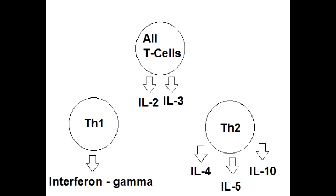What is the function of interleukin-3? The function of interleukin-3 is to support the growth and differentiation of bone marrow stem cells. They have functions similar to that of granulocyte macrophage colony stimulating factor. Also remember that interleukin-2 and interleukin-3 are secreted by all T-cells.